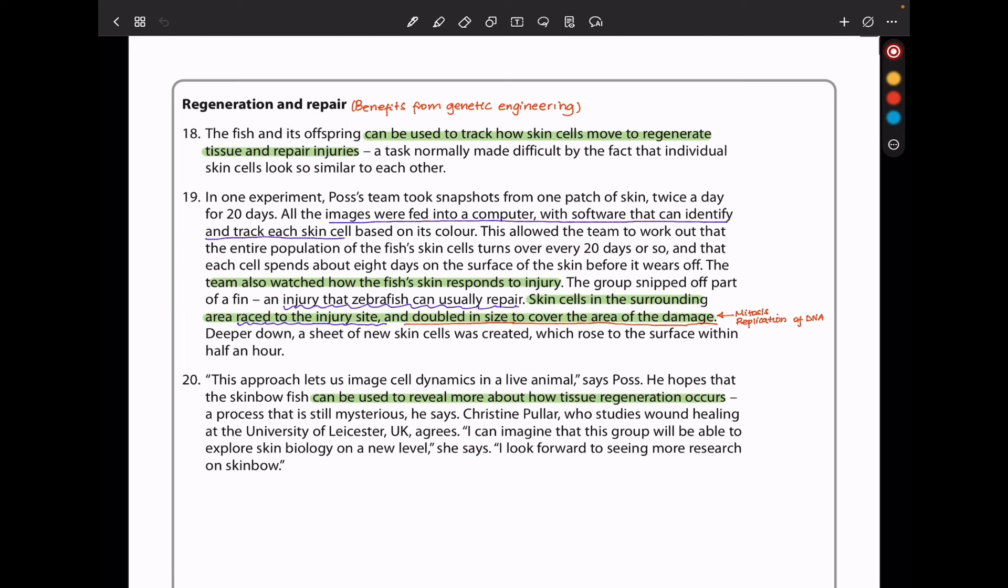And lastly, this is talking about the benefits from genetic engineering. In the future, what are the possible uses of genetic engineering? So they said the fish and its offspring can be used to track how skin cells move to regenerate tissue and repair injuries, a task normally made difficult by the fact that individual skin cells look so similar to each other.